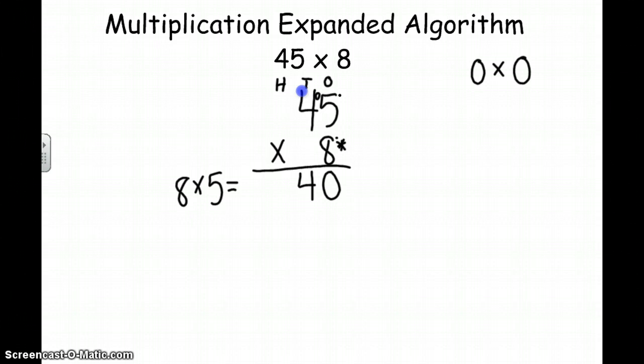Our next step is to take the ones times the tens. Remember, we're always going to start with the bottom number. So we're going to take 8 times the tens place, the 4 is in the tens place, so its value is 40. So 8 times 40 equals.